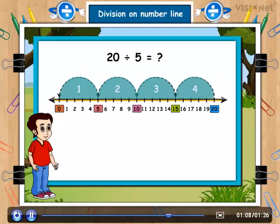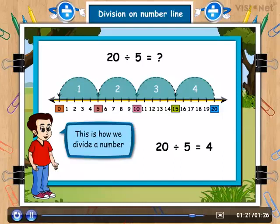It means 20 can be divided into 4 groups of 5 numbers. Mathematically, it is calculated like this. 20 divided by 5 is equal to 4. This is how we divide a number by another number on the number line.